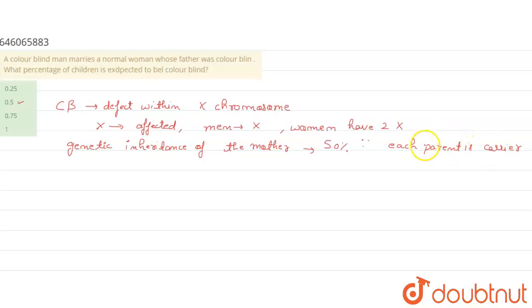So the chances of inheriting a colorblind X chromosome would be 0.5, which is likely for a female child.